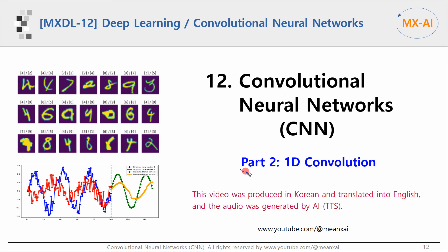This is the second part of a CNN series. In this video, we will look at 1D convolution. 1D convolution can be used for sequence data such as time series and natural language data.